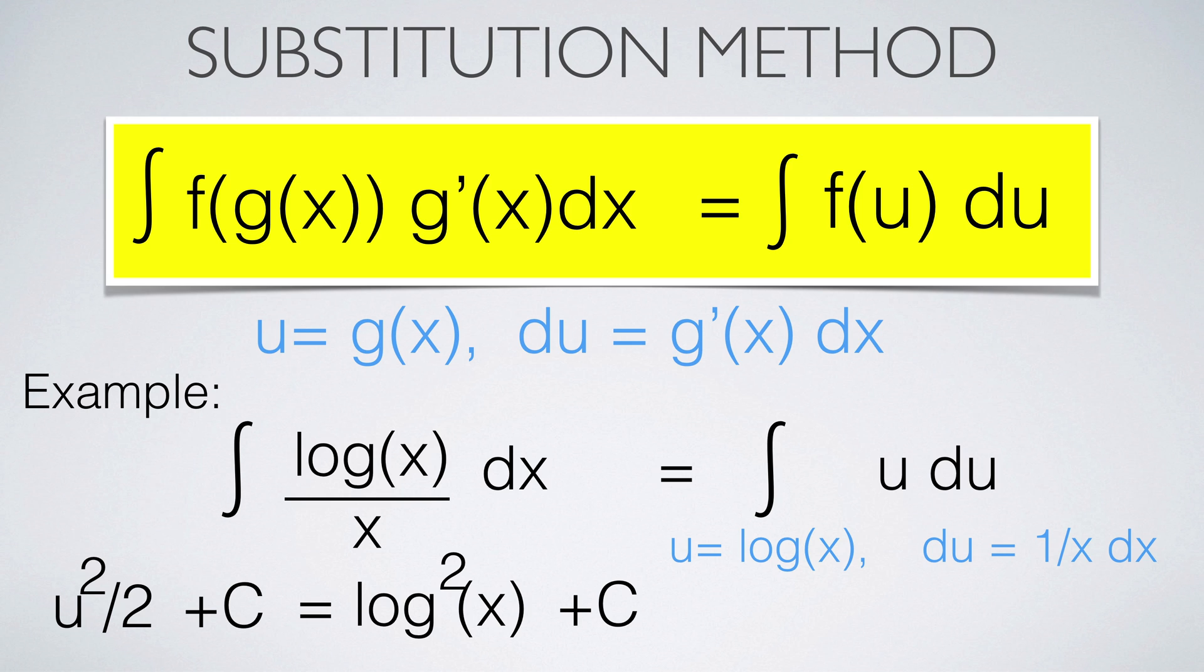The chain rule for differentiation can now be reversed to get the method of substitution. To use this method, identify a function g in the formula and call it u. Then compute du and substitute both dx and g(x). If you get a function of u only, it might lead to the solution. You see a typical example. We want to integrate log(x)/x. We substitute u = log(x). Then compute du = dx/x. We end up with the integral of u. Finally, we back substitute to get u²/2 + C = log²(x) + C.